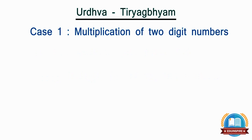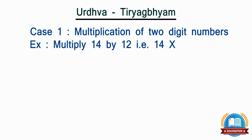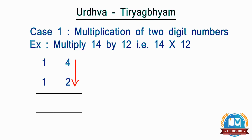Let's start with the multiplication of two digit numbers. Let's take the simple example of multiplying 14 by 12. In order to multiply these two numbers, let's go through the steps of the sutra. Step 1: the rightmost digit of the first number 14, i.e. 4, is multiplied by the rightmost digit of the second number 12, i.e. 2. The product of 4 and 2 becomes 8, and it forms the rightmost side of the answer.